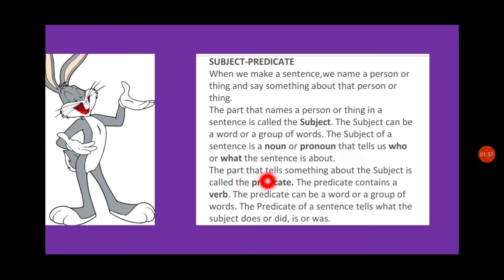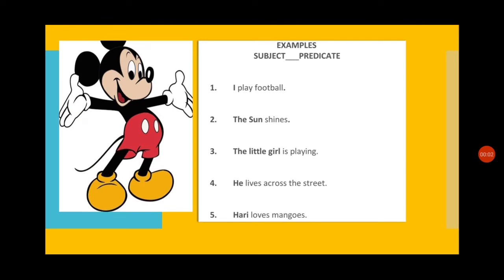The predicate of a sentence tells what the subject does, or did, or is, or was. So subject and predicate are the two main parts of the sentence. The part that names a person or thing is the subject, and the rest of the sentence that tells about the subject is the predicate.